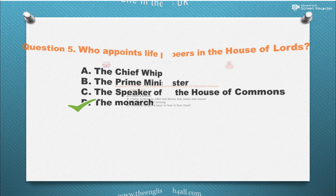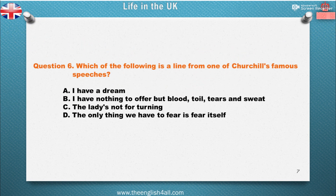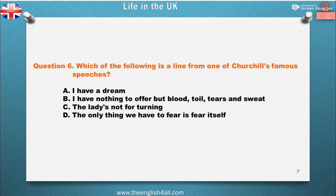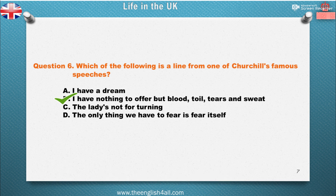Question 6: Which of the following is a line from one of Churchill's famous speeches? A. 'I have a dream.' B. 'I have nothing to offer but blood, toil, tears and sweat.' C. 'The lady's not for turning.' D. 'The only thing we have to fear is fear itself.' The correct answer is: 'I have nothing to offer but blood, toil, tears and sweat.' That was Churchill's first speech to the House of Commons after he became Prime Minister in 1940.